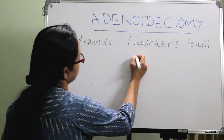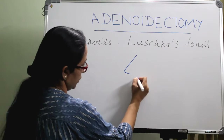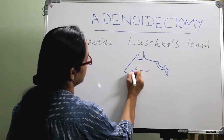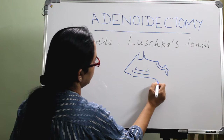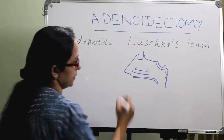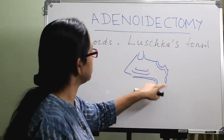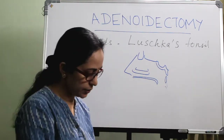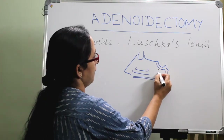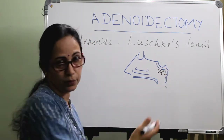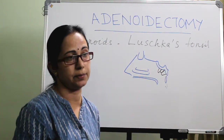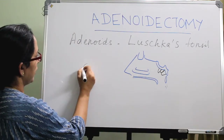If we look at the nasopharynx — with the nose, frontal sinus, middle turbinate, inferior turbinate, palate, atlas and axis vertebrae — the adenoids are seen at the junction of the roof and the posterior wall of the nasopharynx. This roof is formed by the basi-sphenoid and basi-occiput, and the posterior wall is formed by the arch of atlas and axis vertebra.